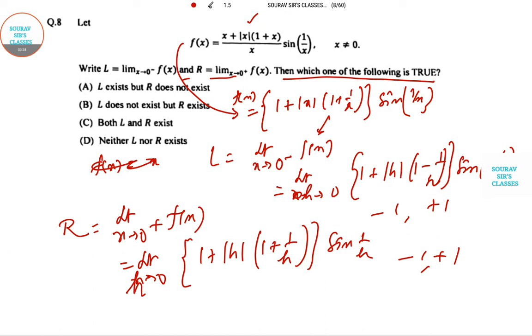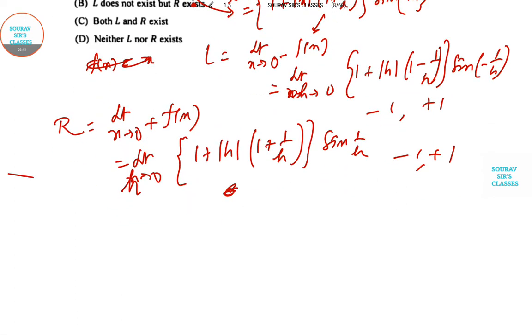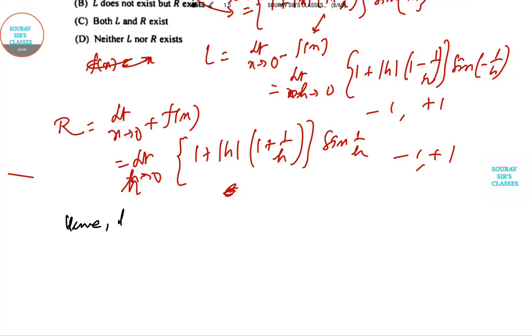For R, which is also provided, the positive right hand limit 0 plus F(x). This will be replaced by 1 mod H and 1 plus 1 by H, sine of 1 by H. This also lies between minus 1 to plus 1. Hence, neither left hand limit nor right hand limit exists. So option D is the correct answer.